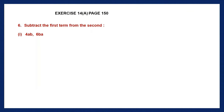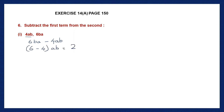Subtract the first term from the second, so the second term has to come first. So 6ba minus 4ab. Now these are like terms — we have b and a on both sides. So let's take only the numbers: 6 minus 4ab. 6 minus 4 is 2, so the answer is 2ab.